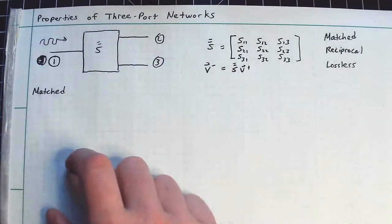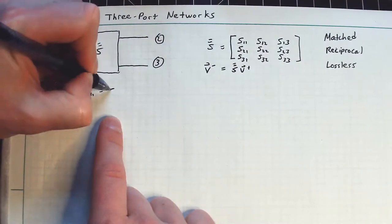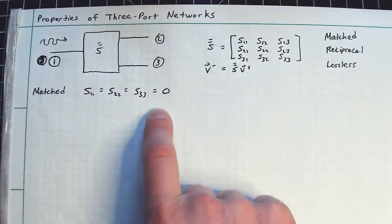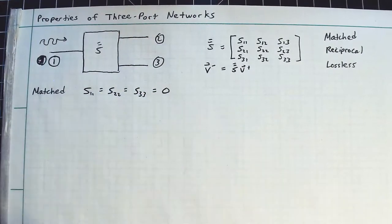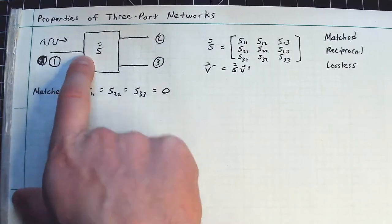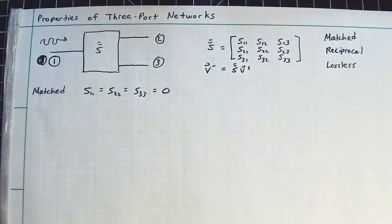So when we speak of a matched microwave network, what we're basically saying is S11 is equal to S22, which is equal to S33, which is equal to zero. That's what it means to have a matched port. There's no initial reflection if I excite this port here.